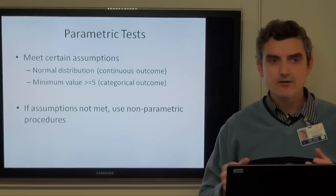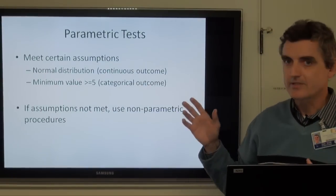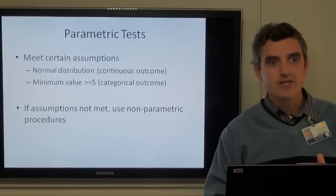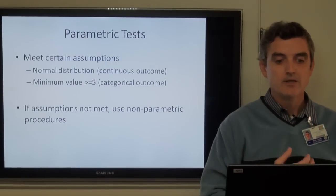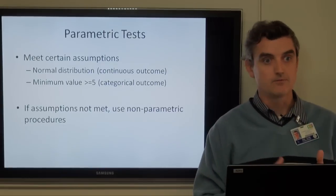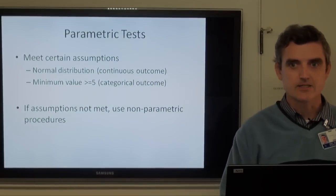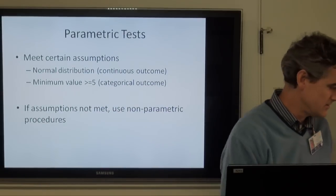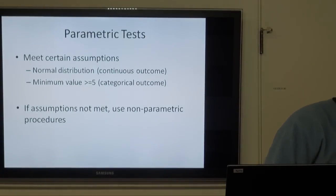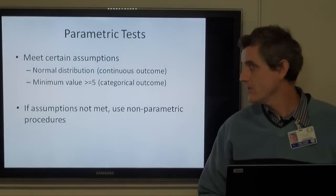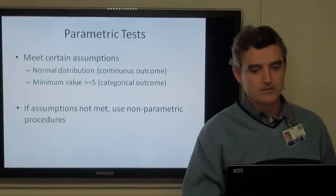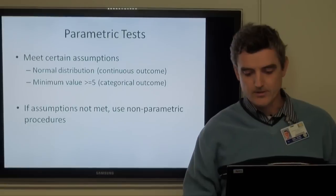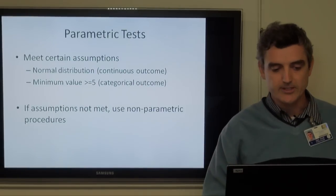The idea behind parametric and non-parametric boils down to the term 'parametric' — the tests we've already used assume that the data meet certain assumptions. With a continuous outcome, it assumes that data are distributed normally. We all know what the normal distribution looks like. Or that the minimum expected value is at least five. But we know not all data follow those assumptions, and so if those assumptions aren't met we can use a different type of procedure — non-parametric procedures.